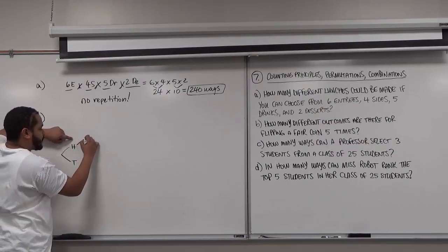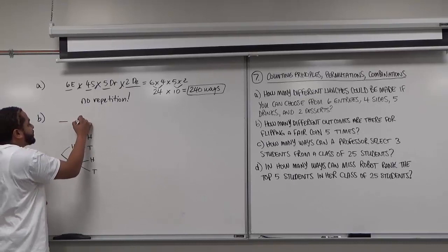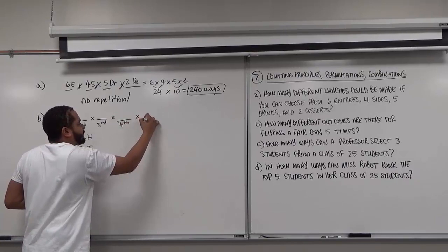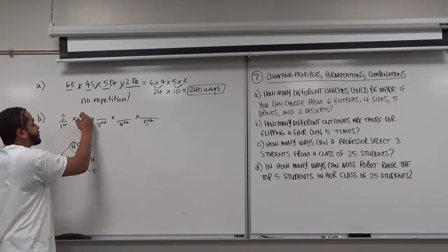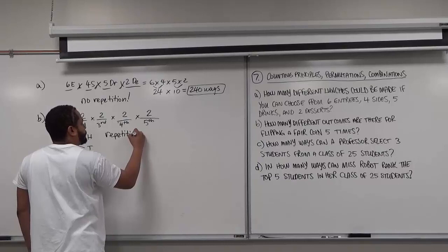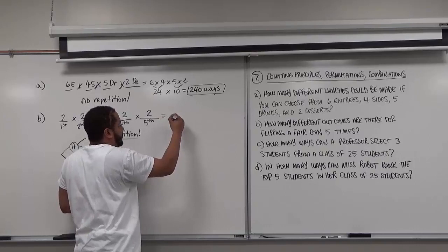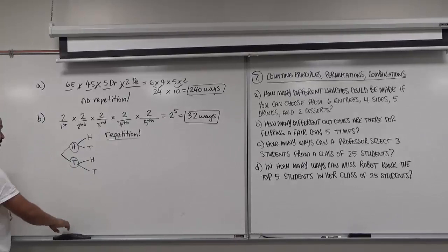Whether it's heads or tails, the process repeats over and over. The number of ways each outcome happens — first flip, second flip, third flip, fourth flip, fifth flip — is always out of two options. It's either heads or tails for each flip. So we see that repetition does occur, and because repetition occurs we get the same pattern for each number as we're multiplying. This then becomes 2 to the fifth power, which gives us 32 different ways. There are 32 different outcomes for flipping a coin five times.